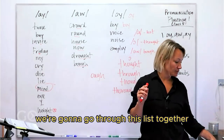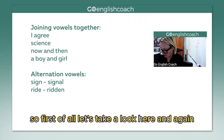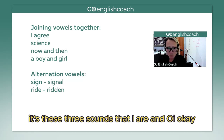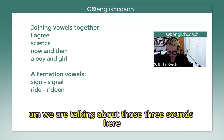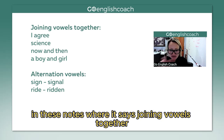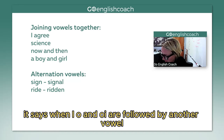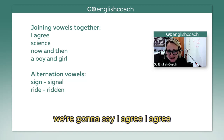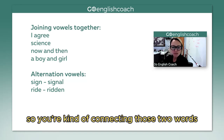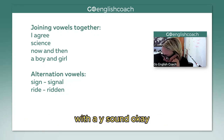So what I'd like to do is go through this list together. We're talking about those three sounds in these notes where it says 'joining vowels together.' It says: when I, ow, and oy are followed by another vowel, use Y or W to join them. So, 'I agree' — you're kind of connecting those two words with a Y sound. I agree. Same thing here: 'science' — you can hear the Y. Science.